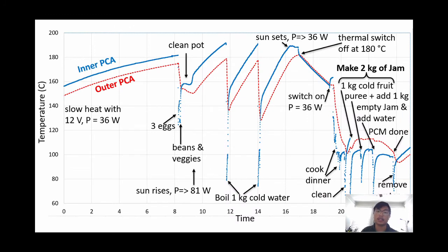Now we can see an actual day of cooking. We can see that the ISEC with PCM is able to cook multiple meals in a day, even two hours after the sun is set. In total, we see that the ISEC was able to cook three eggs, beans, and vegetables, boil one kilogram of water, cook dinner, and make two kilograms of jam all in one day. Like Marcorio said before, we can see that the ISEC is a capable cooking device that we hope can significantly displace biomass cooking.